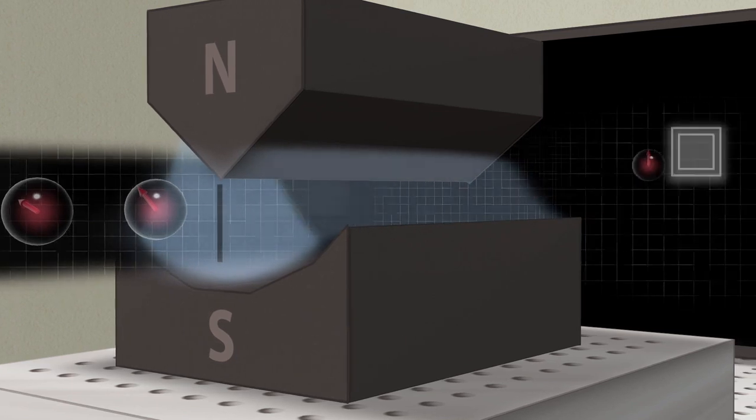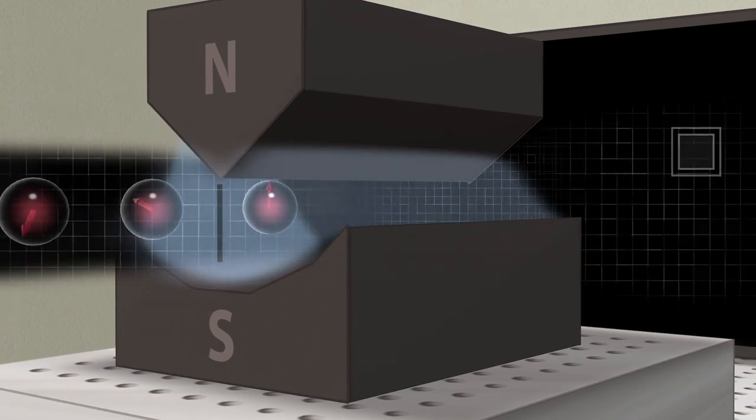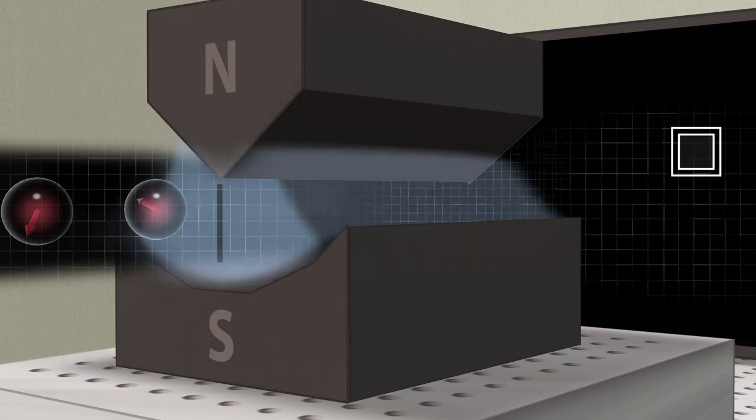It forces the spin to take a random orientation, either in line with the inhomogeneous magnetic field, or in the opposite direction.